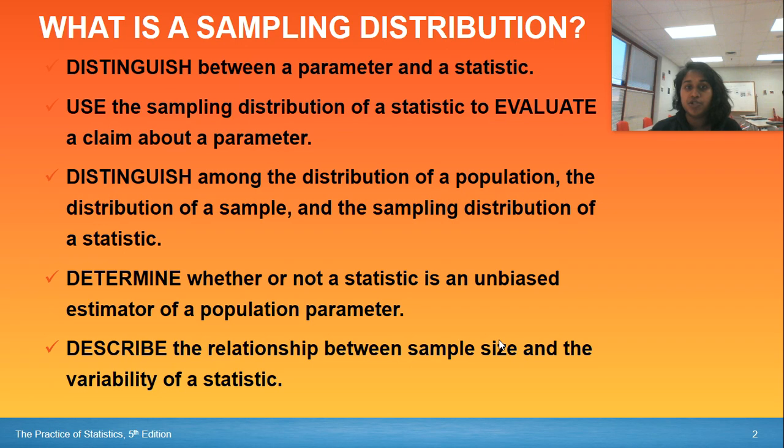You can use the sampling distribution of a statistic to evaluate a claim about parameters. You can distinguish among the distribution of a population, the distribution of a sample, and the sampling distribution of statistics. So those are three unique things you need to know, kind of a comparison and contrast.